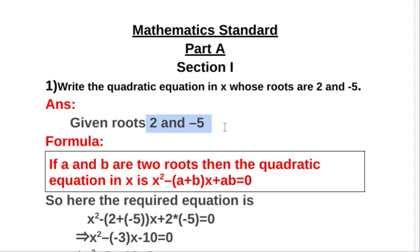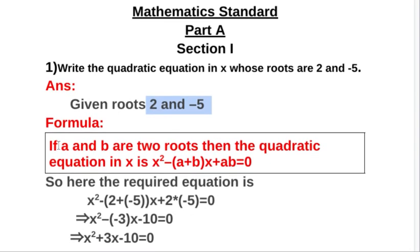So here two roots are given, that is 2 and minus 5. So we know the formula: if a and b are two roots, then the quadratic equation in x is x² minus (a+b)x plus ab equal to 0.